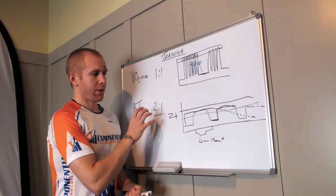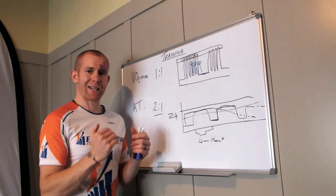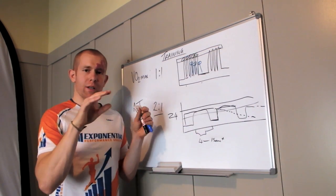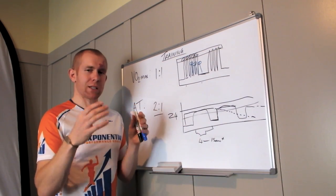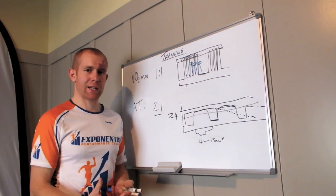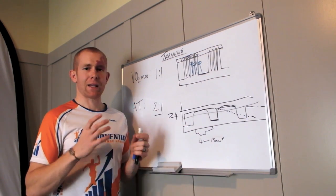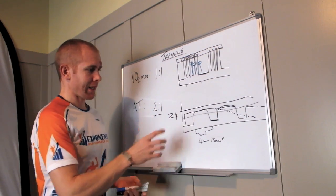So the key thing with anaerobic threshold training is to increase that blood lactate, hold it as high as we can for as long as we can, and so the body gets used to dealing with it, and it gets better at managing it. So that's the key thing.